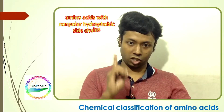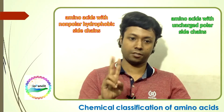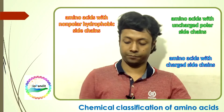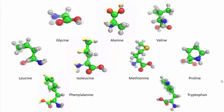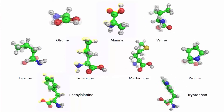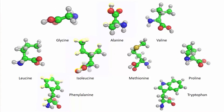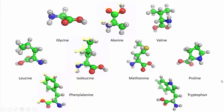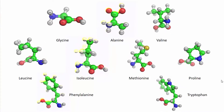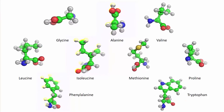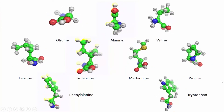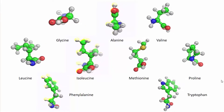According to the chemical properties of the side chain, you can classify the amino acids into three major groups: those with non-polar hydrophobic side chains, those with uncharged polar side chains, and those with charged polar side chains. Nine amino acids are classified as having non-polar hydrophobic side chains. Glycine has the smallest possible side chain, which is just a hydrogen atom. Alanine, valine, leucine, and isoleucine have aliphatic hydrocarbon side chains. Methionine has a thioether side chain. Proline comprises a cyclic pyrrolidine side chain, which is unique among the 20 standard amino acids. Phenylalanine and tryptophan contain aromatic side chains.